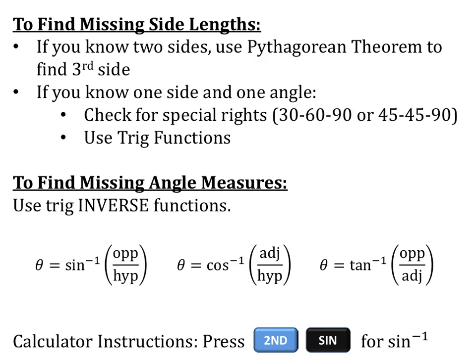To find missing angle measures, we're going to use inverse trig functions. A trig inverse function is the inverse of the regular trig function, so you'll see sine to the negative one, and instead of putting the angle in parentheses, you put the ratio. Using SOH CAH TOA: sine inverse takes opposite over hypotenuse in parentheses, cosine inverse takes adjacent over hypotenuse, and tangent inverse takes opposite over adjacent. You can still use SOH CAH TOA with your inverse functions.